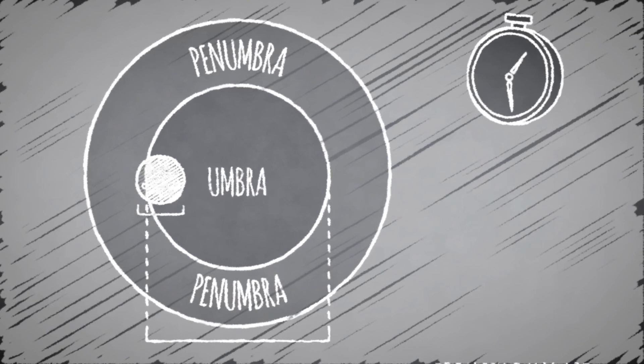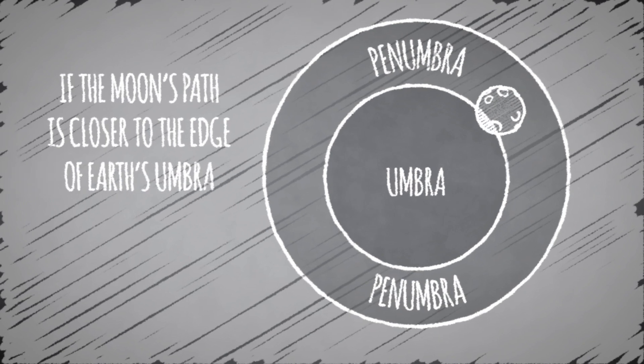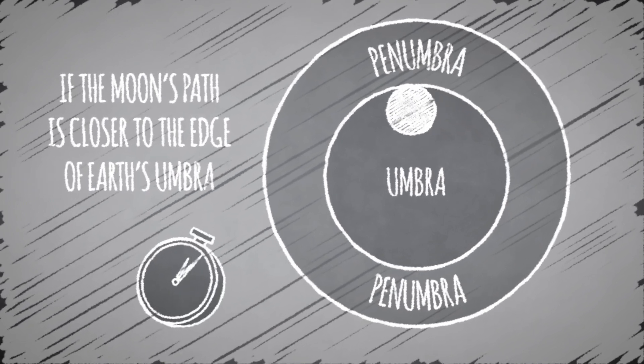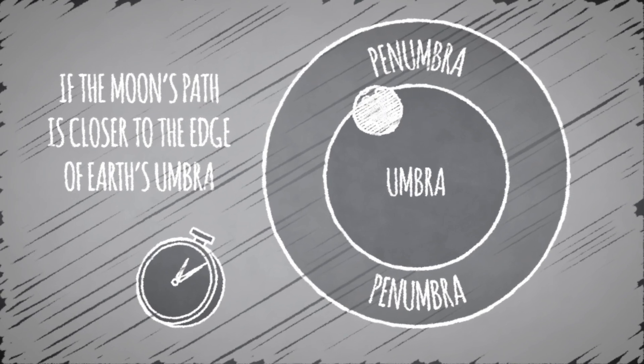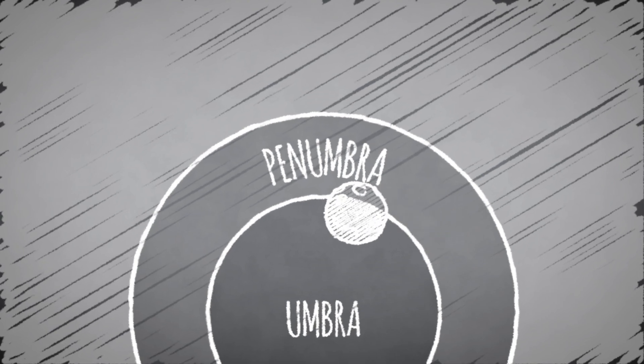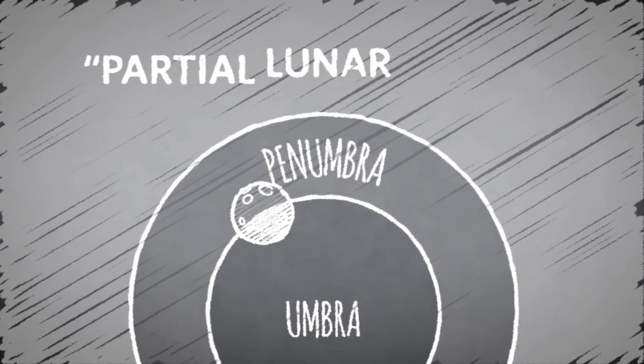On the other hand, if the moon skims just inside the edge of the umbra, totality may last only a matter of minutes, as the moon starts exiting soon after it has entered. If the moon doesn't completely enter the umbra, totality doesn't occur. This is a partial lunar eclipse.